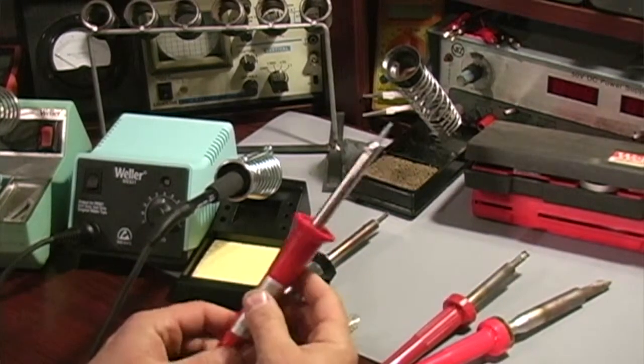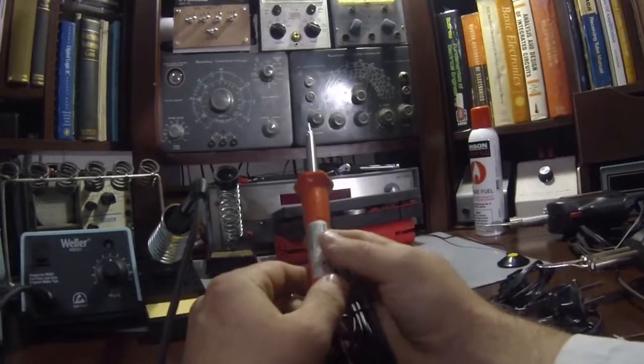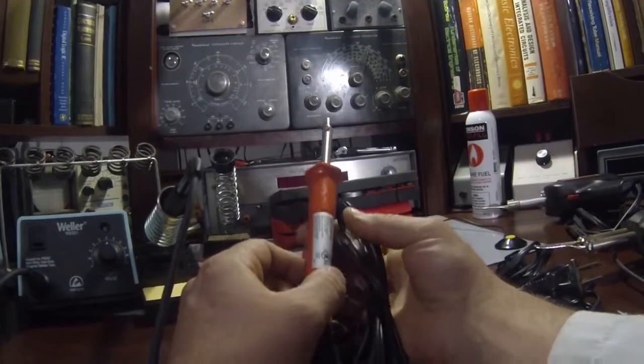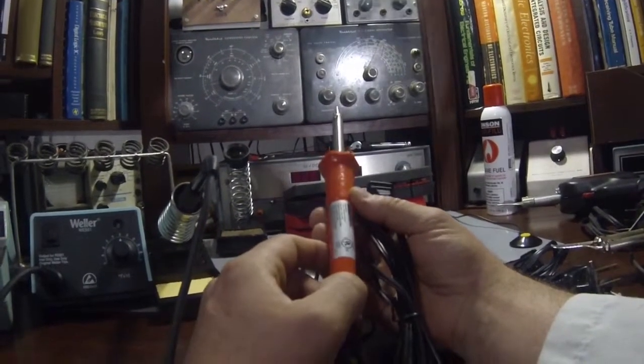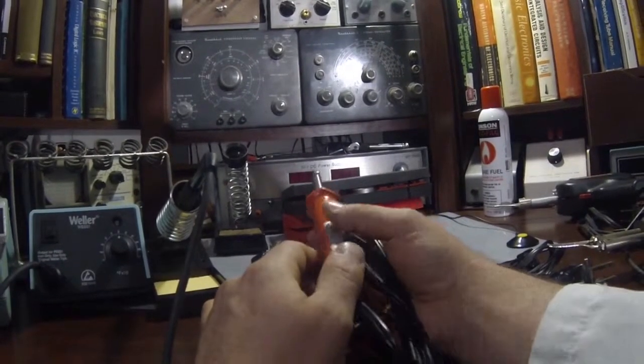This is a much better option. This is a Radio Shack version, which Radio Shack's kind of teetering on not being in business. We don't know what they're going to do, but it is a better soldering iron. This is also a 30 watt. Good for circuit boards. You're not going to melt anything or burn it up with 30 watt.